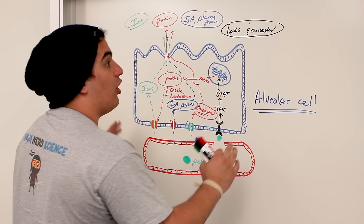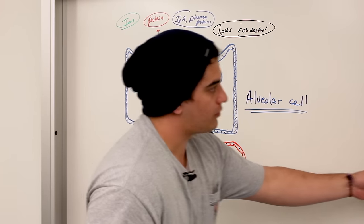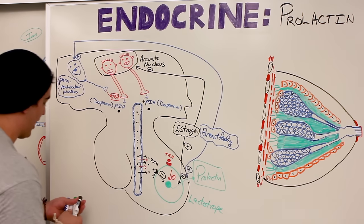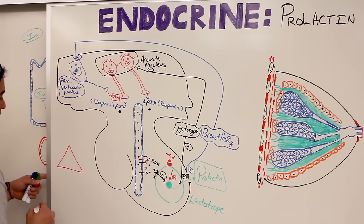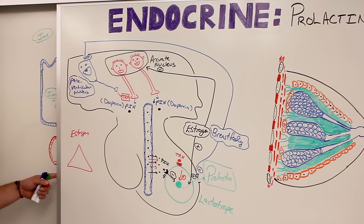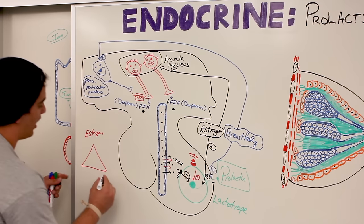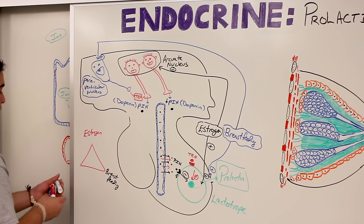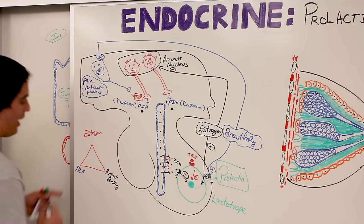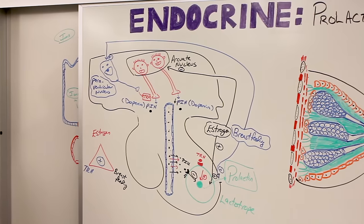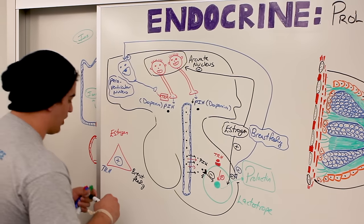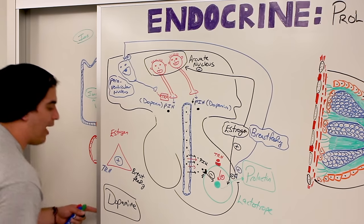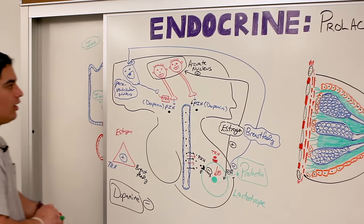Now we know what stimulates and inhibits prolactin production. The three stimuli are: estrogen — a very powerful stimulus; breastfeeding — a very powerful stimulus; and thyrotropin releasing hormone — a very positive stimulus. The inhibitor of prolactin production is dopamine, which is a very, very powerful inhibitor.